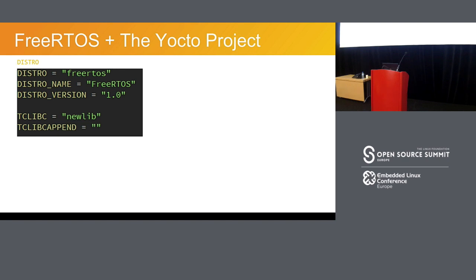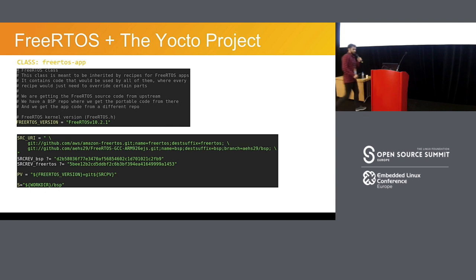The distro.conf is not very complicated — it's pretty much a placeholder with just the name of the distro. The important part is the TC_LIBC variable that specifies we're going to use newlib as the C library. On a normal distro like Poky you would see either musl or glibc in that part.